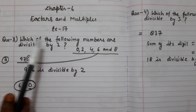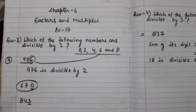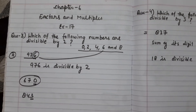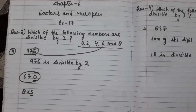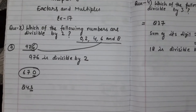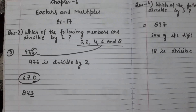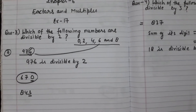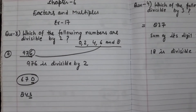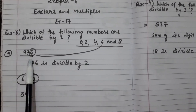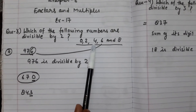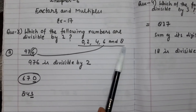Question number 3 is: which of the following numbers are divisible by 2? To check divisibility, first of all let's look at the rules. A number is divisible by 2 if its unit digit is any one of 0, 2, 4, 6, or 8.